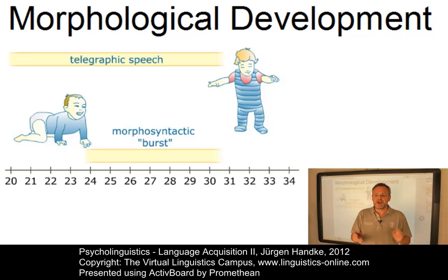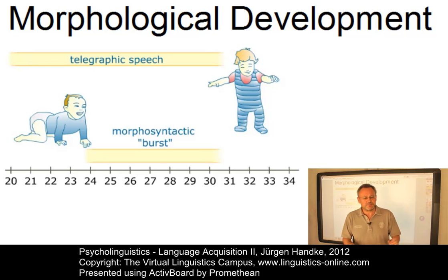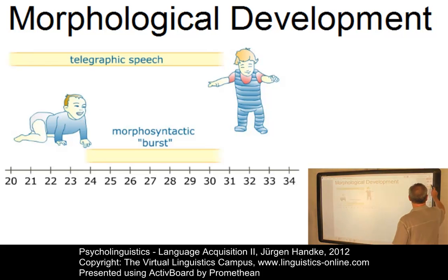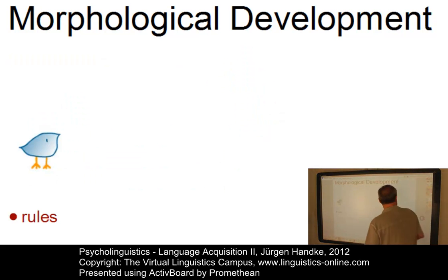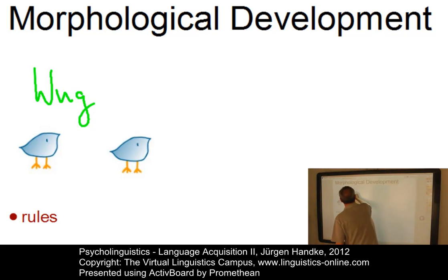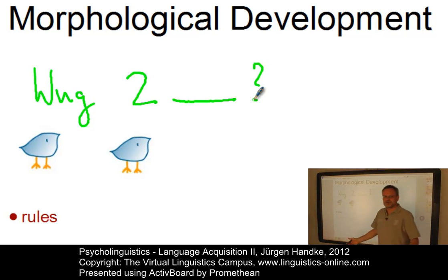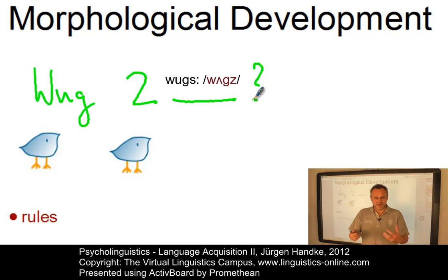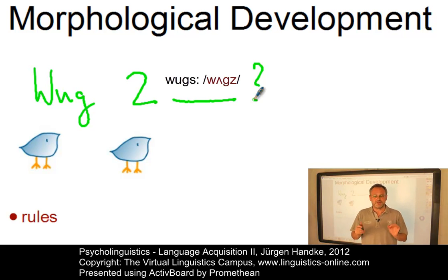Morphological development consists of the acquisition of the relevant morphs plus the rules governing their use. That children possess morphological rules has been demonstrated in a classical study in the 1950s which used the so-called WUG procedure. The idea was quite simple: children were instructed 'Now this is a WUG' and then asked 'What about this? Here is another one, so you have two...' And all children answered, of course, 'WUGs'. So without having been told that the plural involves the addition of a particular morpheme, they in the vast majority ended up producing the correct plural form.